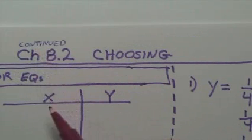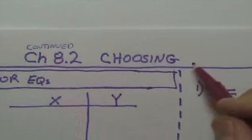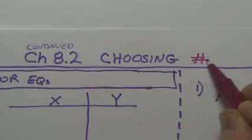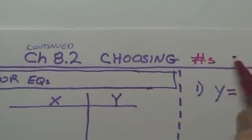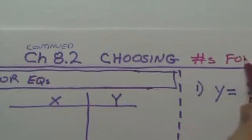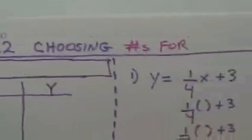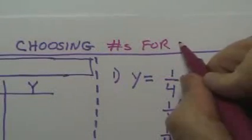Okay, chapter 8.2 continued. What we're going to do is choosing numbers for x.